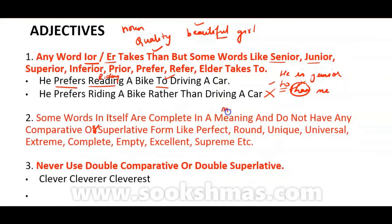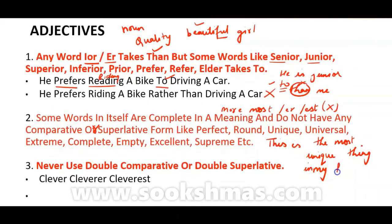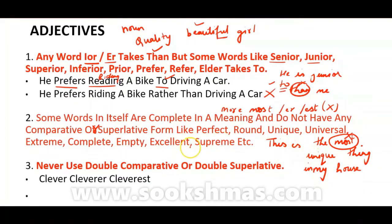So with these absolute adjectives, we will not add 'more,' 'most,' '-er,' or '-est.' For example, if someone says 'This is the most unique thing in my house,' that is wrong because 'unique' is already complete. Similarly, 'most excellent' is wrong — it will only be 'excellent.'